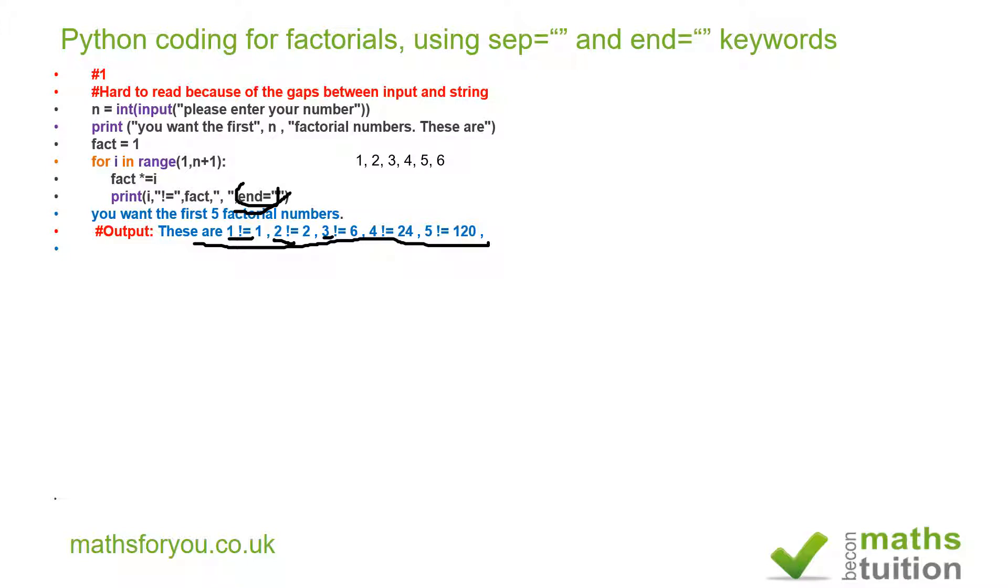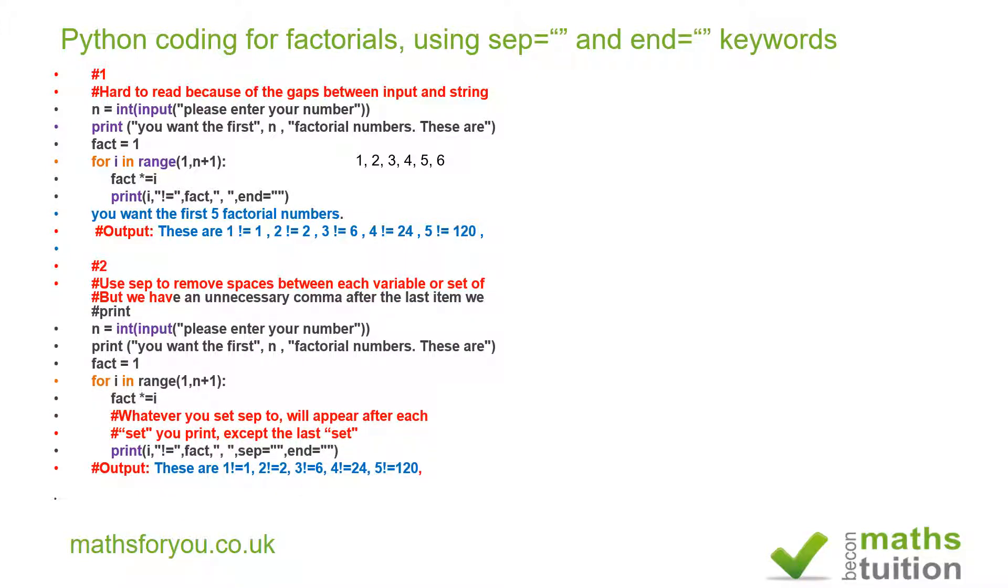Now for version two. If you look closely, versions two and three are just to tidy up. We've got a gap there, a gap there, and gaps throughout. To remove the gaps, I've introduced the 'sep' keyword there.